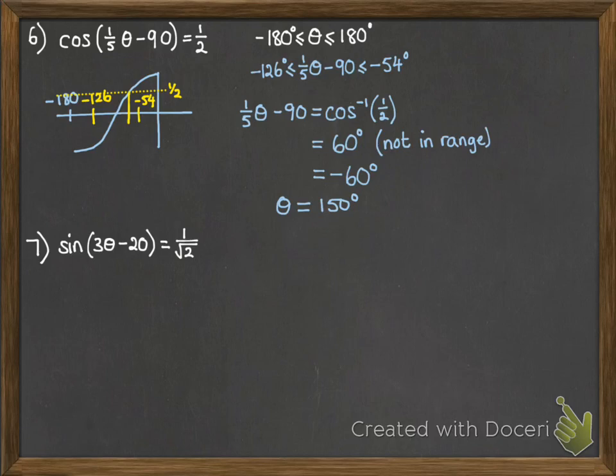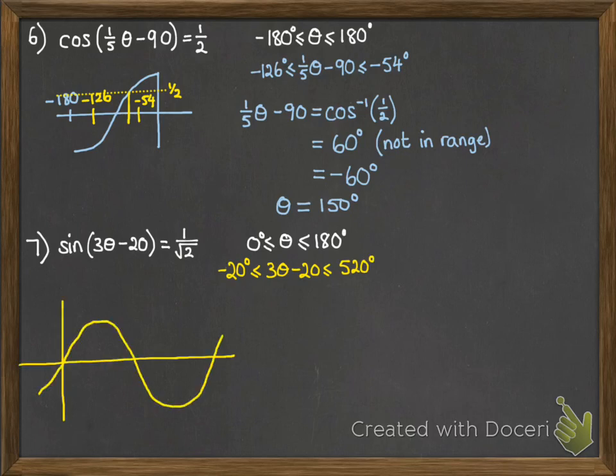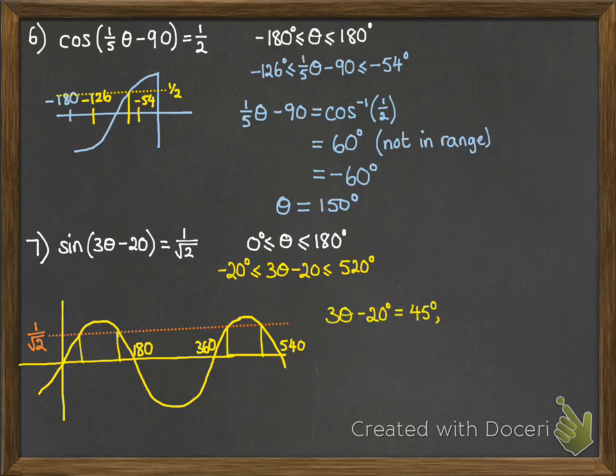Sine of (3θ - 20) equals 1 over root 2. And we've got a range between 0 and 180. So adjust the range, times by 3, subtract 20. So that's the new range that we need to look within. And we're looking for when it's equal to 1 over root 2. So we're going to get four solutions. Now, the first one we know from our table of special values is 45 degrees.